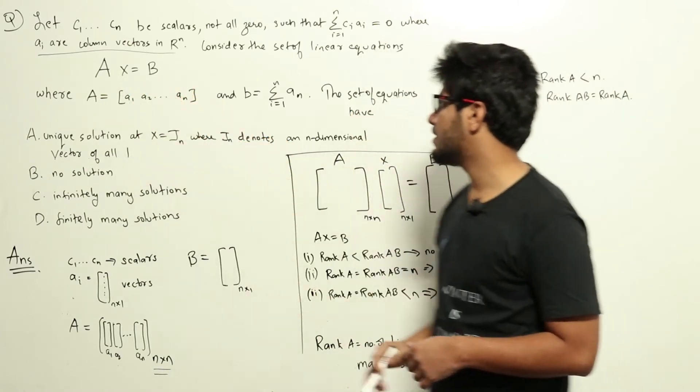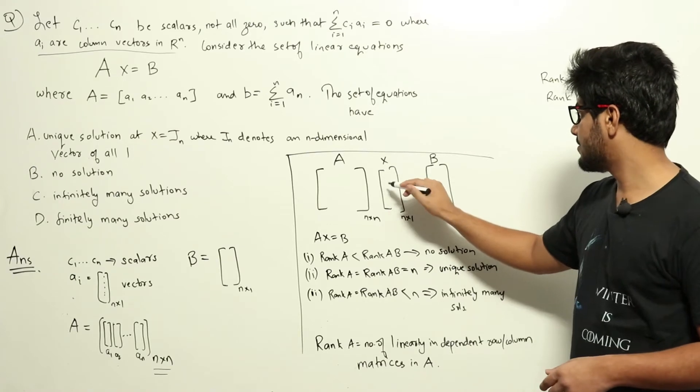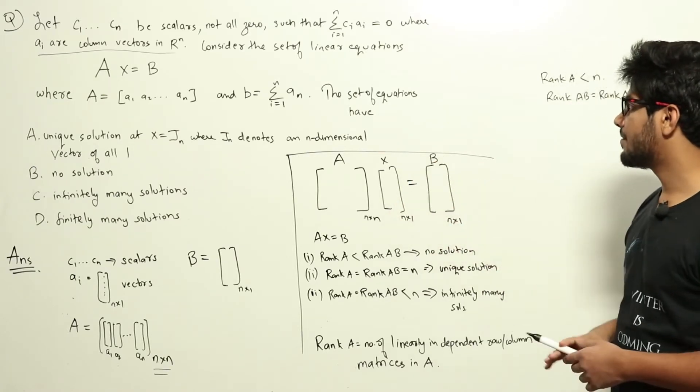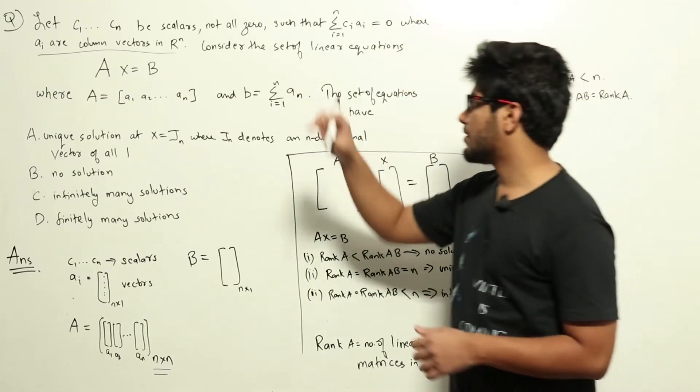They have given this statement Ax equal to b. So A is an n by n matrix and x will be an n by 1 matrix of x's, which is equal to b. They are asking us to find out the number of solutions to this equation.